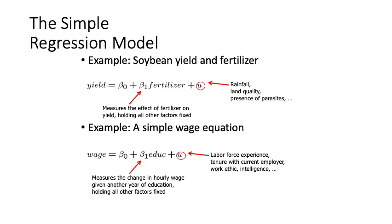Another example is what we call a simple wage equation, which links the average level of wages with the average level of education. Beta 1 measures the change in hourly wage given another year of education, holding all other factors fixed. These other factors could be labor force experience, work ethic, intelligence, and so on. Beta naught is the average wage for a person with no education.